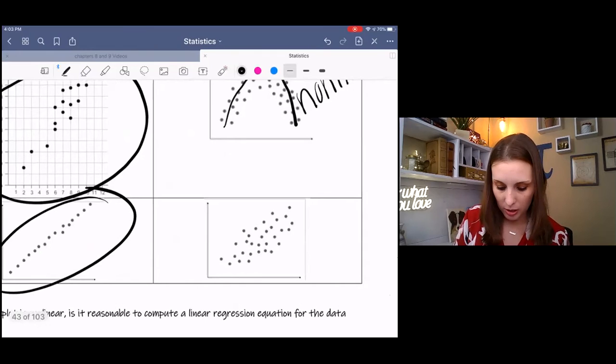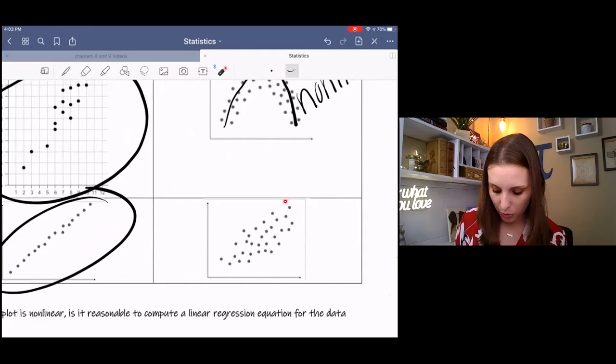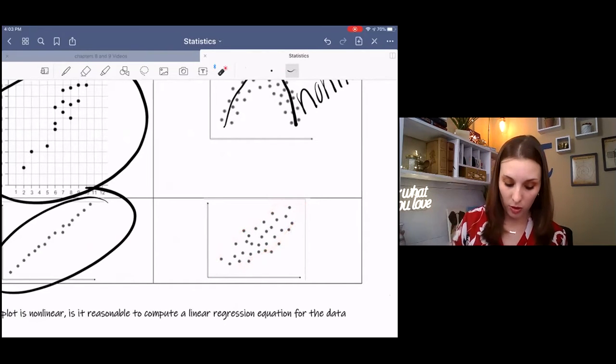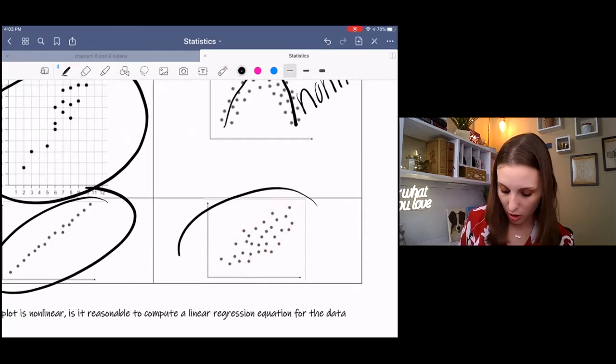And then this one is a little more spread out. But if I were to circle the majority of the data, it does follow that trend. So this one is good also.